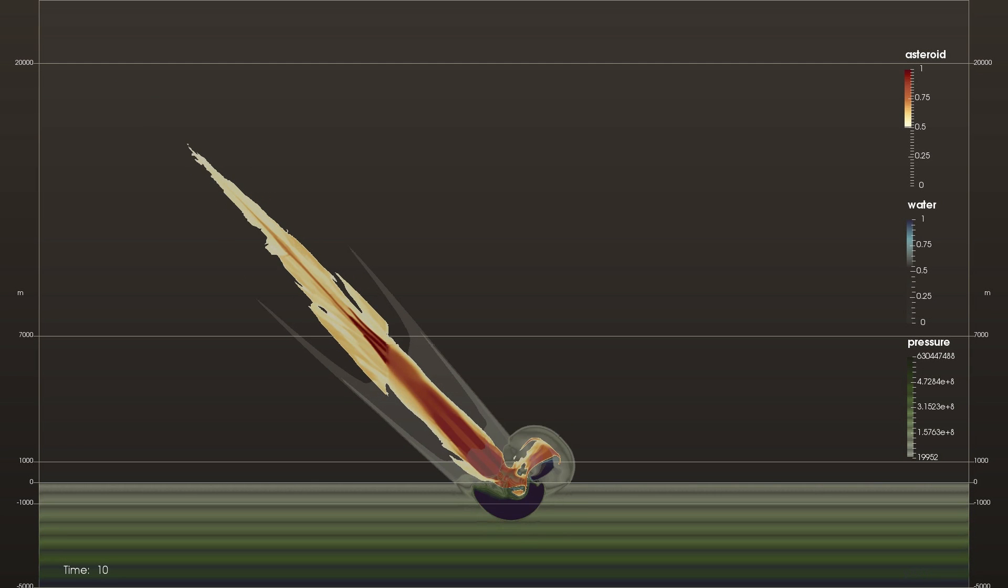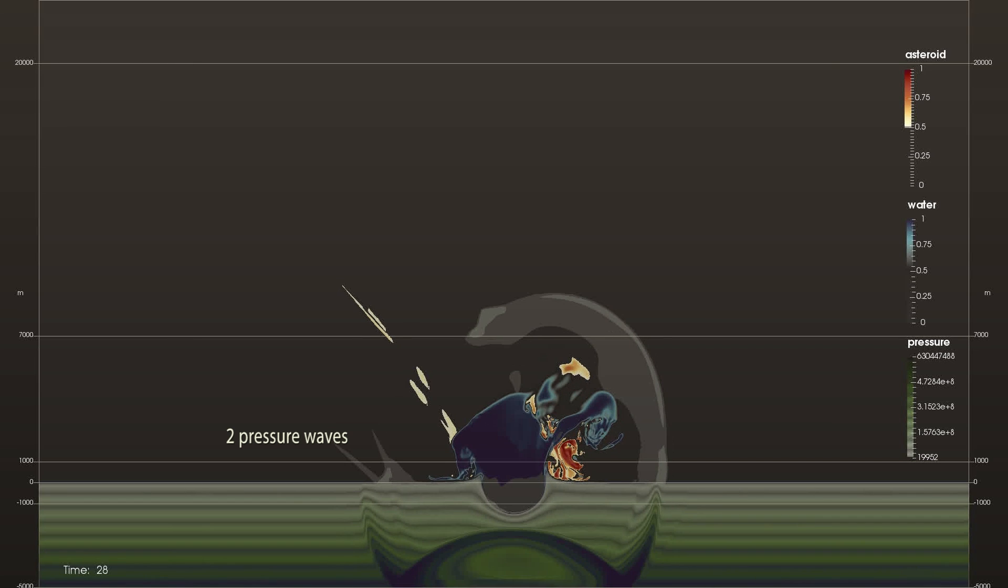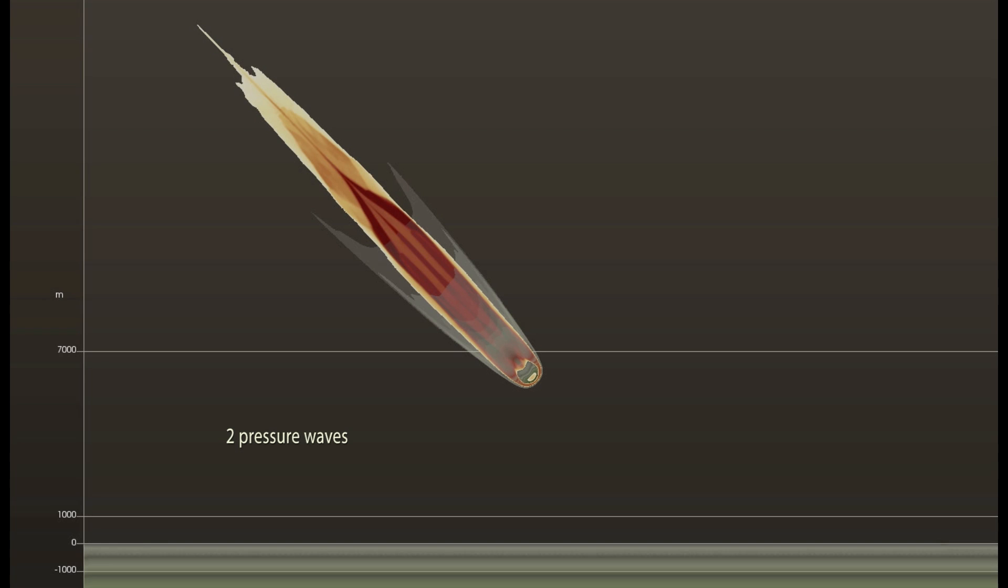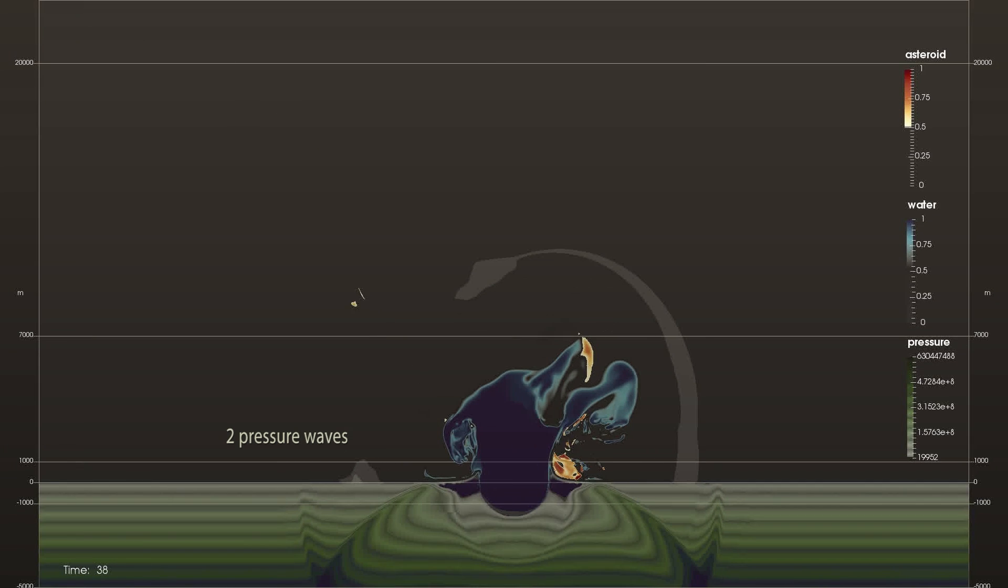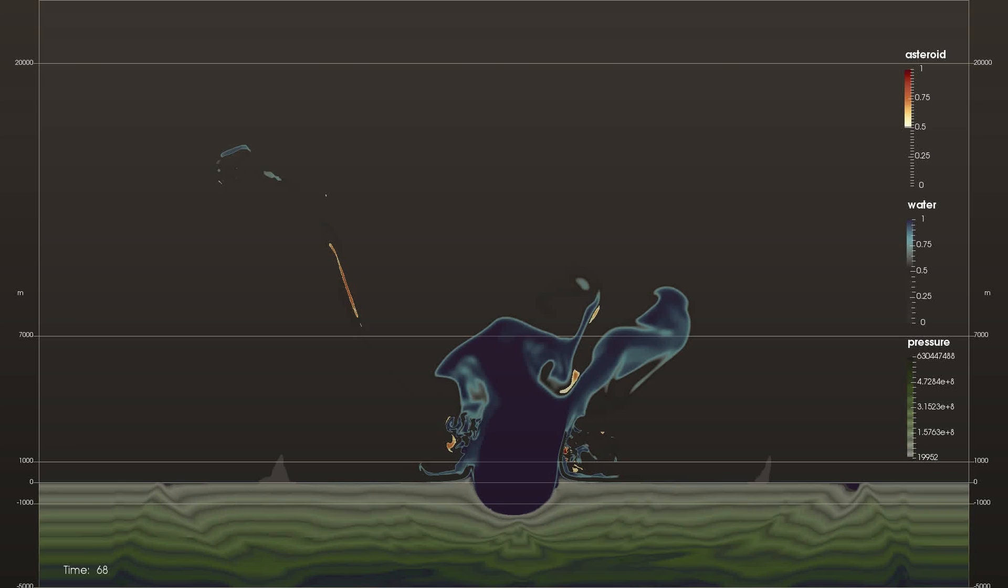A feature discovered through this visualization is a pressure enhancement uprange of airburst impacts. Two pressure waves combine to create this: one from the asteroid and its trajectory, and one from the explosion when the asteroid material hits the water. This may affect wave propagation and will have to be studied.